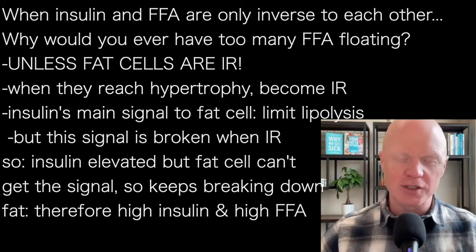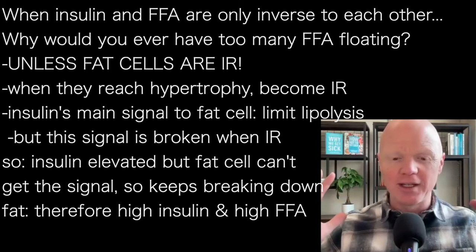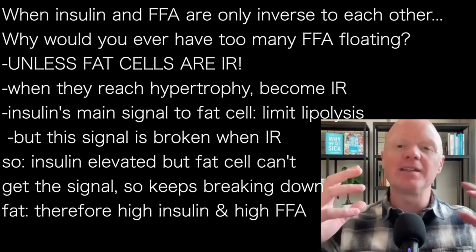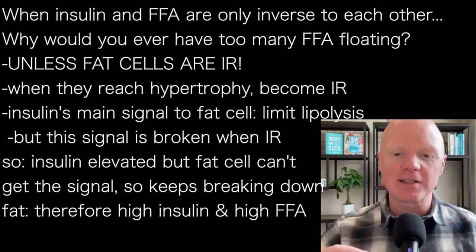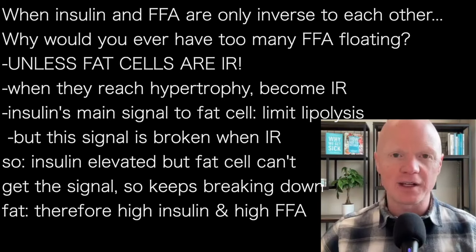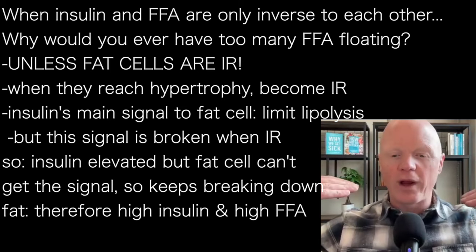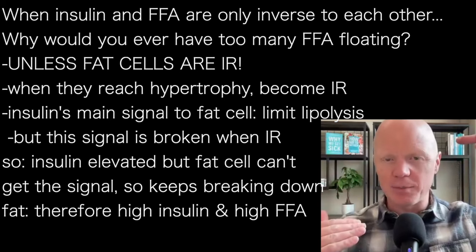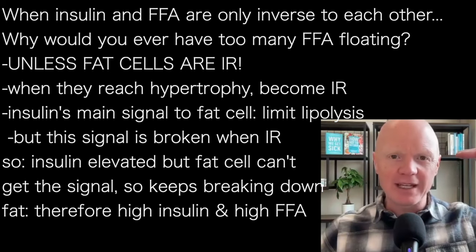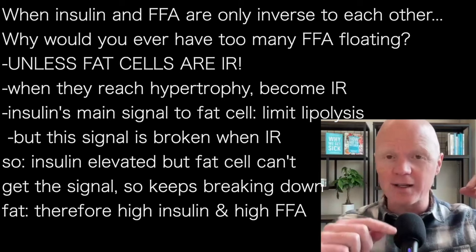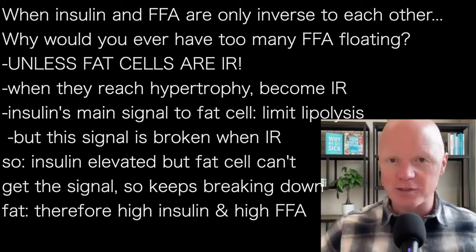When the fat cell has reached a point of hypertrophy that it can't really grow any further, it will start to become insulin resistant. Remember, insulin's main signal at fat cells is to inhibit lipolysis — to prevent the breakdown of fat. But that's the very signal that gets broken as the fat cell becomes insulin resistant. So now you have this uniquely harmful state where insulin is elevated, which would normally be inhibiting lipolysis, but the fat cell isn't listening anymore. It's breaking down fat even though insulin is trying to tell it not to. Thus, we have high insulin and elevated free fatty acids — the perfect metabolic storm.